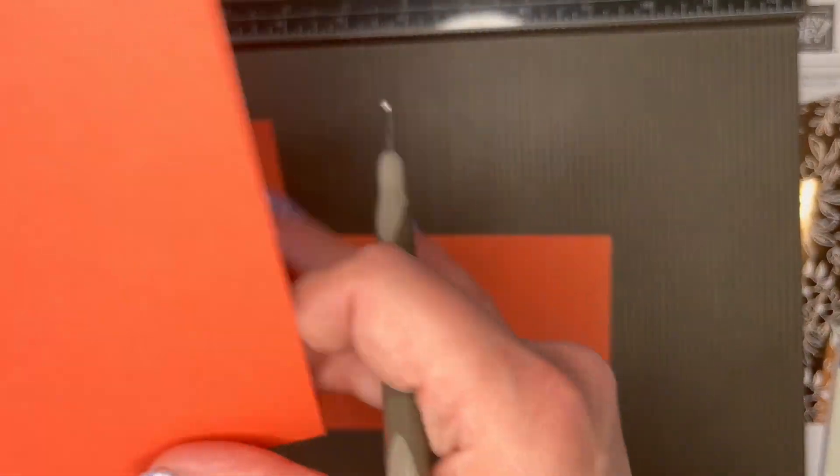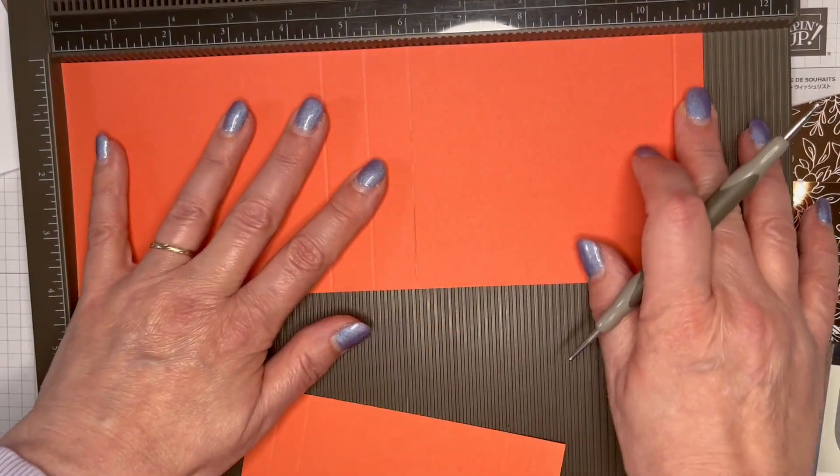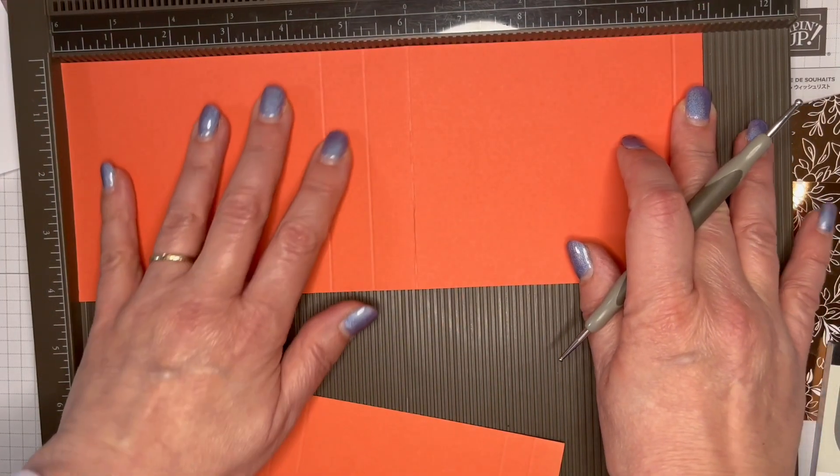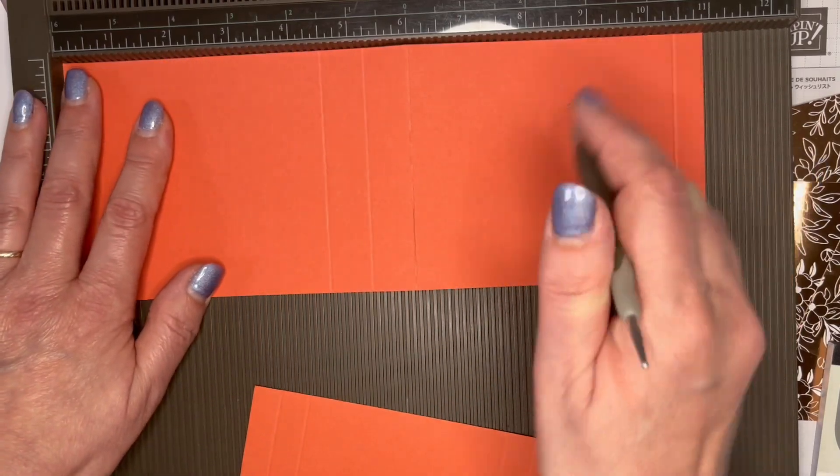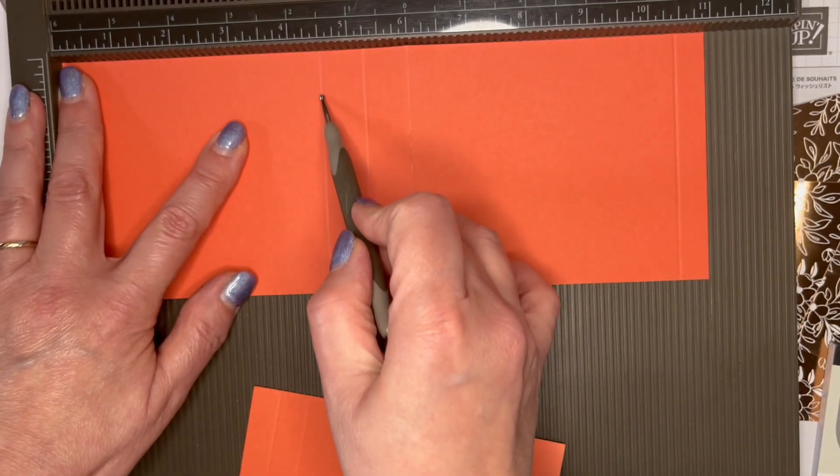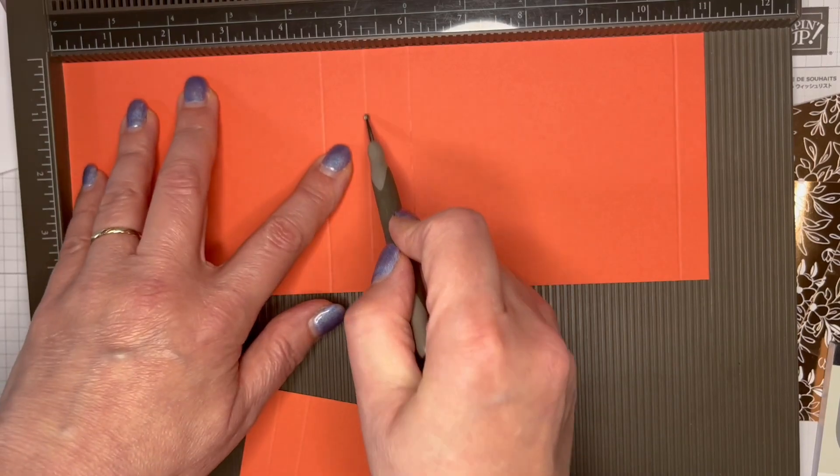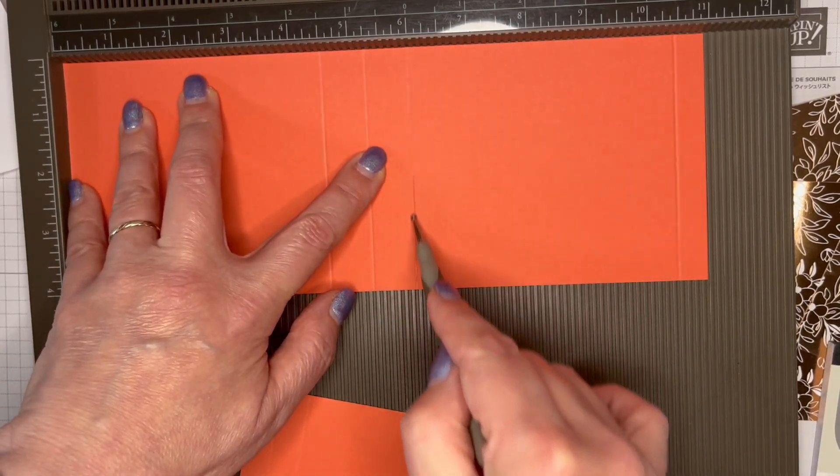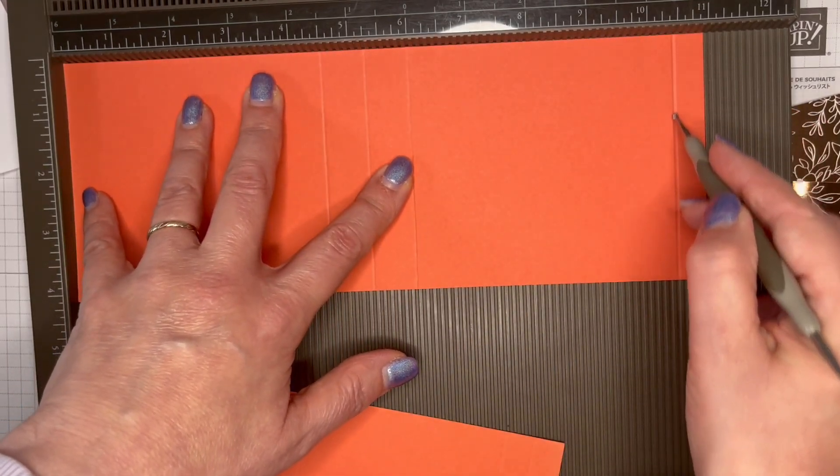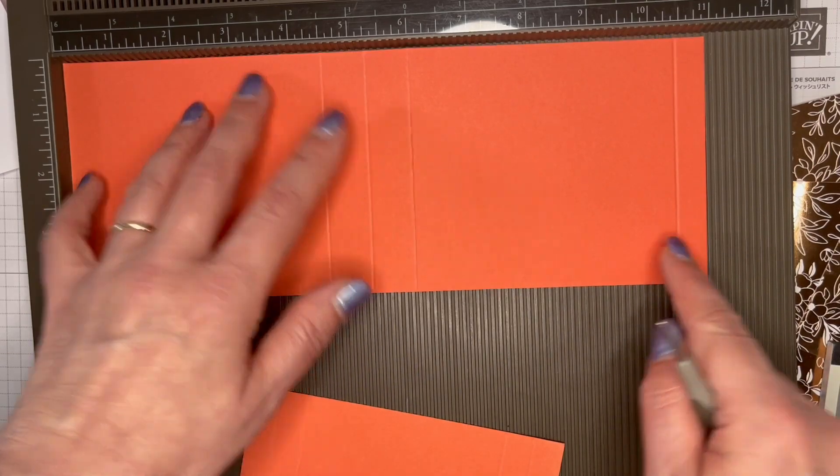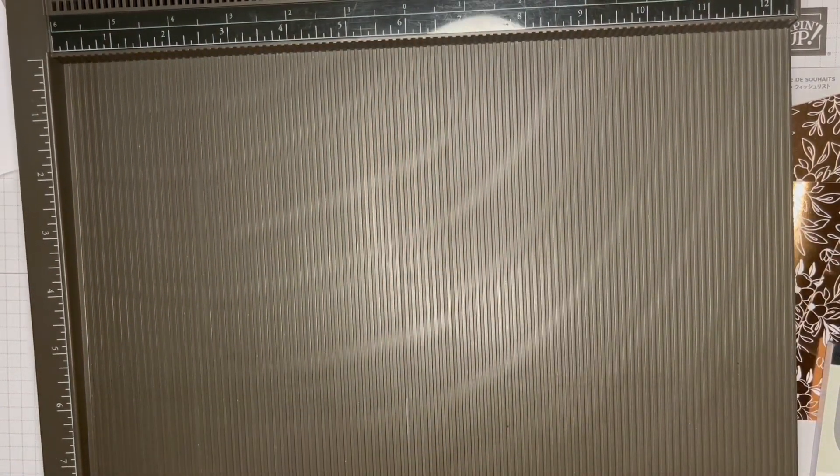The longer piece is 11 inches by four and one inch, and I've scored that at four and a half, five and a quarter, six, and ten and a half inches. Okay, that's the scoring done.